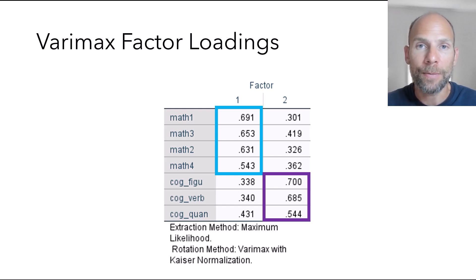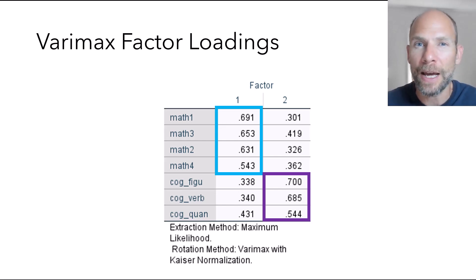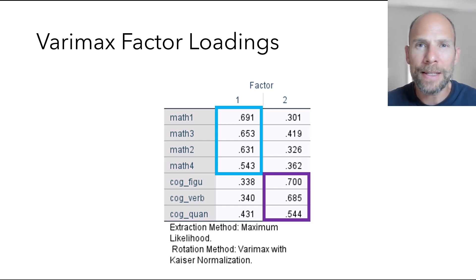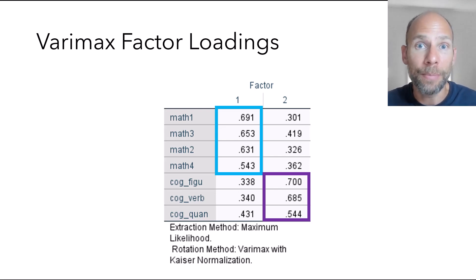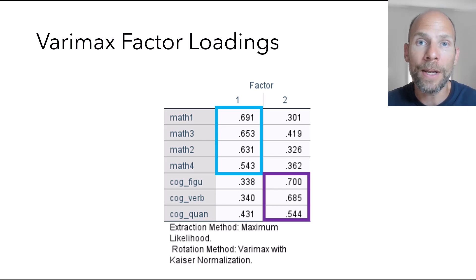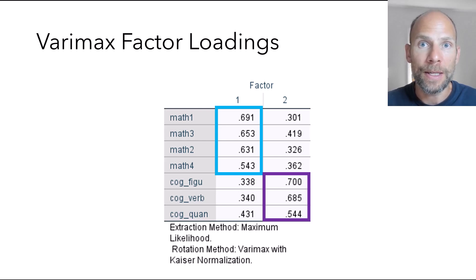However, we have very substantial cross loadings in this solution. Remember that this is a solution that forces the two factors to be uncorrelated, so the math factor would correlate zero with the cognitive ability factor two. Not only does that not make good substantive sense — because we would expect math ability to be positively correlated with general cognitive ability — but also, this leads to a deficient simple structure. Simple structure means we strive to find a rotated loading matrix where all variables have high loadings on only one factor and close to zero loadings on all other factors, which makes factors clearly interpretable.